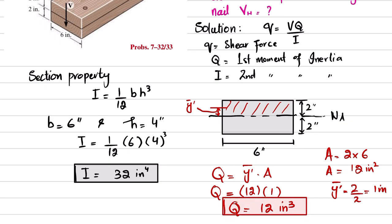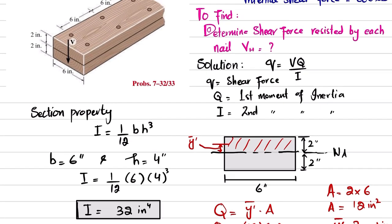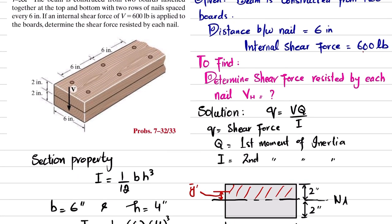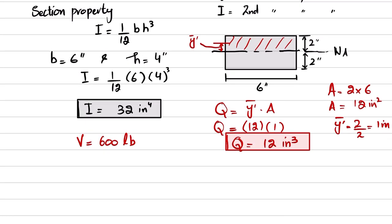We have Q, and V is given in the question. V is 600 pounds. You can see here that V is 600 pounds. So all the values are there, so you can just put it in the formula.